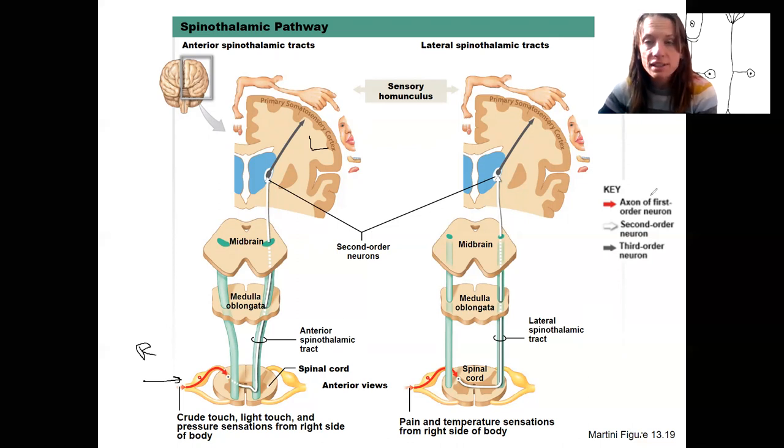I also like this picture. It breaks down these different neurons that I told you about. The first order neuron, that first neuron, the second order neuron, and the third order neuron up here, just like I showed you in the other diagram.